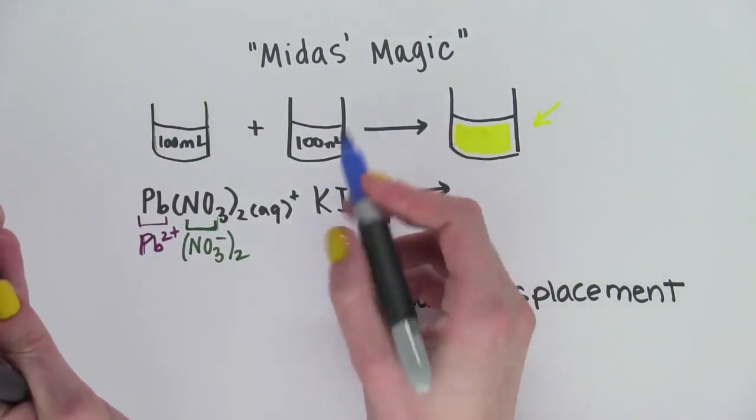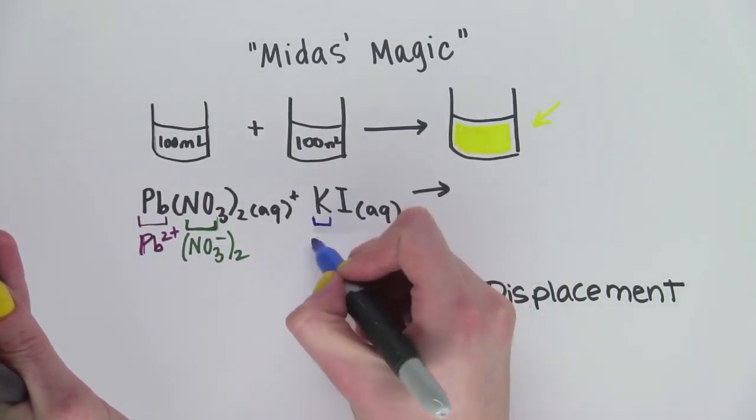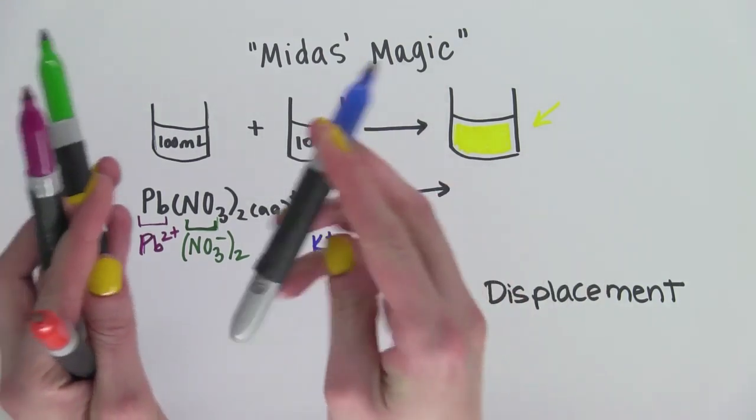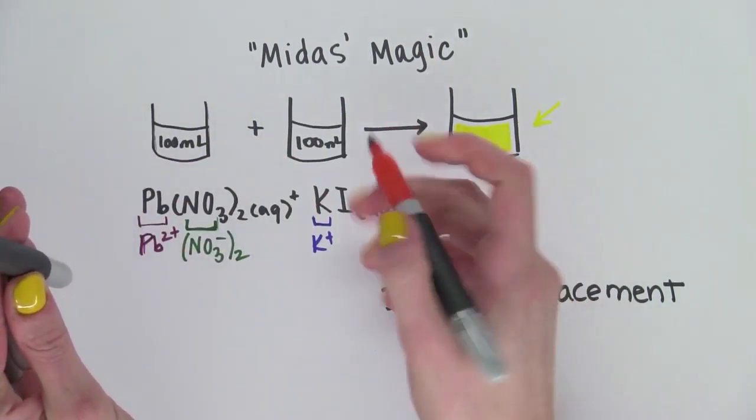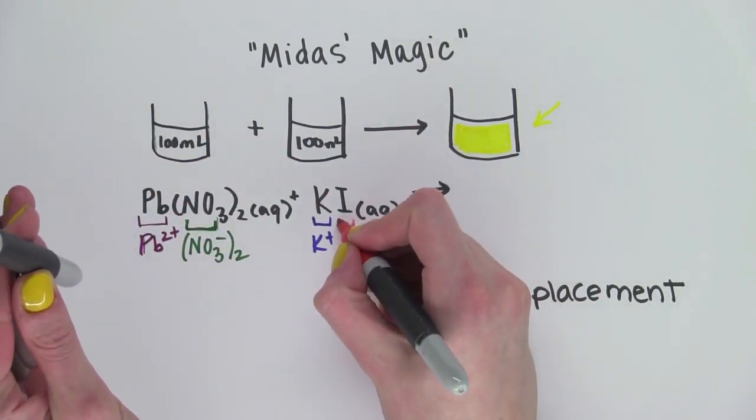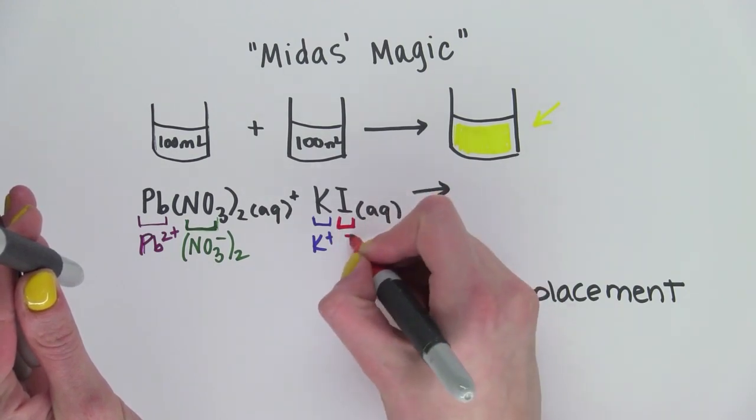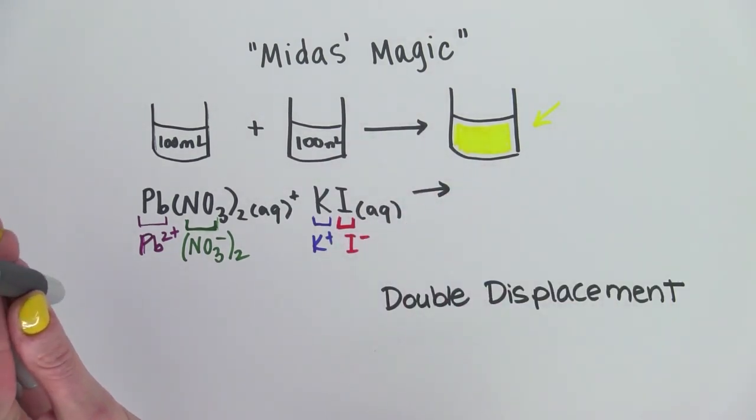Our other compound over here has potassium, which has a plus 1. And our anion is iodide, which is minus 1.